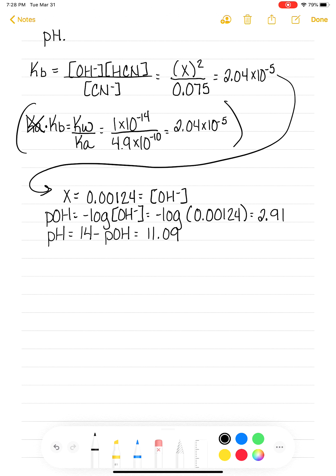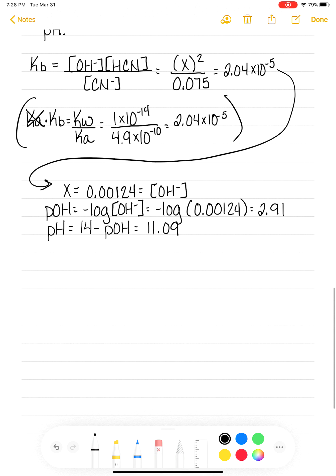I've got one more example, a sample problem for you for calculating the pH of a salt solution. Calculate the pH of 0.93 molar C6H5NH3Cl. That's a big molecule.